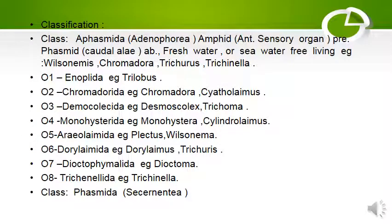Classification: Nematoda is divided into two classes. Class 1 is Aphasmida, in which the amphid (anterior sensory organ) is present and phasmid (caudal sensory organ) is absent. These live in fresh water and sea water as free-living organisms. Examples include Trichuris and Trichinella. Order 1 is Anoplida; Trilobus is the example.